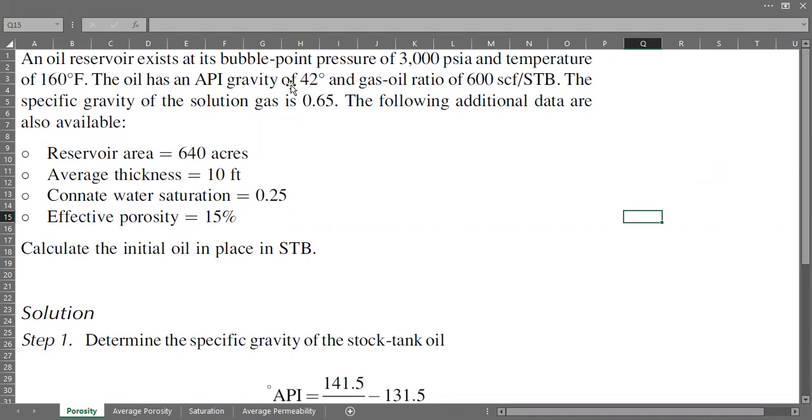An oil reservoir exists at its bubble point pressure of 3000 PSIA and temperature of 160 Fahrenheit. The oil has an API gravity of 42 degrees and gas oil ratio of 600 SCF per STB. The specific gravity of the solution gas is 0.65. The following additional data are also available: reservoir area of 640 acres, average thickness of 10 feet, connate water saturation of 0.25, and effective porosity is 15%.